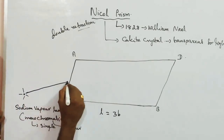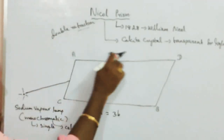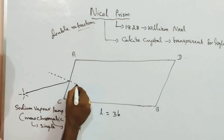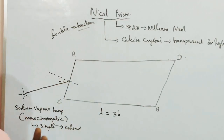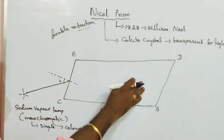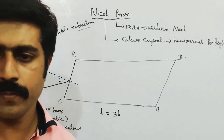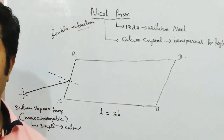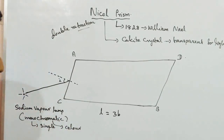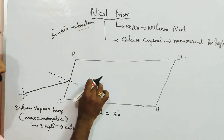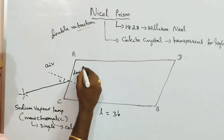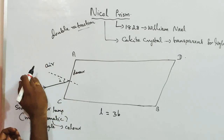So the light falls on one of the faces — the side AC of the Nicol Prism. At a particular angle, let us draw a normal line here. This is the angle of incidence. On the side of air, this is a fully light transparent material. Calcite material is used, which is the denser medium. So light goes from rarer to denser.